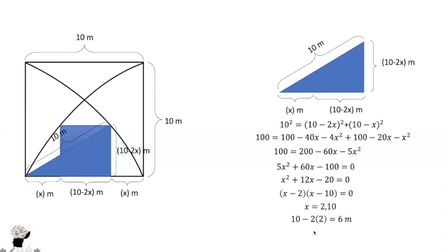So from here we are going to get the length of the square to be 6 meters. So if you want the area of the blue square, it's 6², that is 36 meters squared.